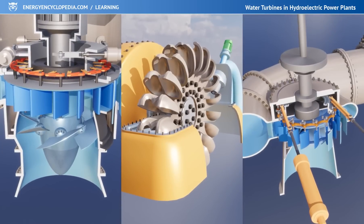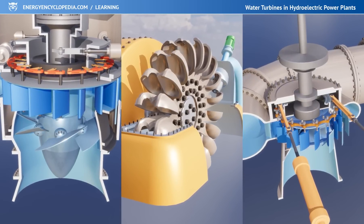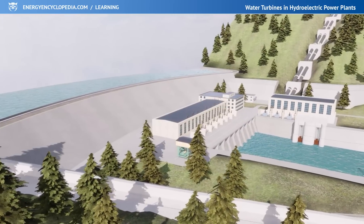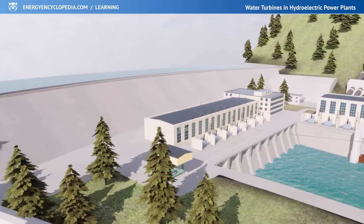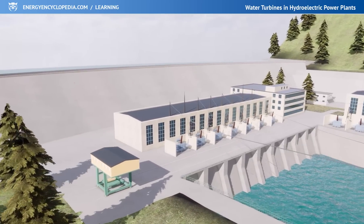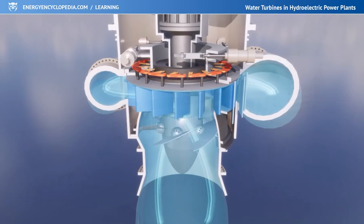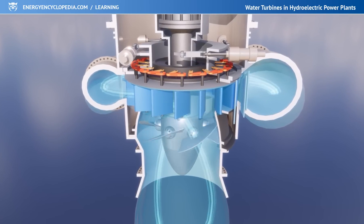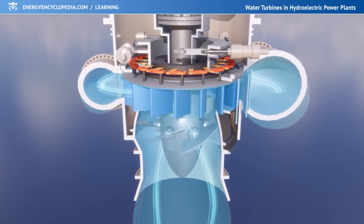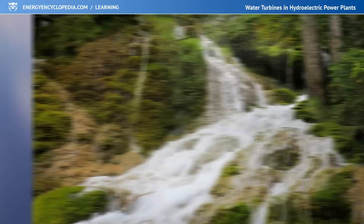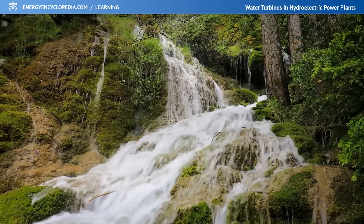Water turbines are a necessary and fundamental part of every hydroelectric power plant, allowing energy to be generated using a clean, relatively available, and most likely the most important renewable resource — water. Water, which as a primary source gives up its potential and kinetic energy in a water turbine, but which through the natural cycle of evaporation and condensation is constantly being renewed.